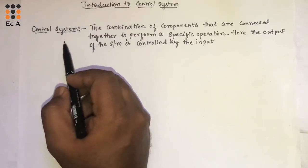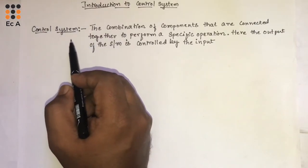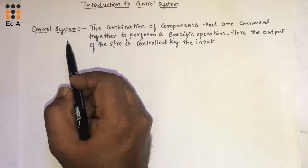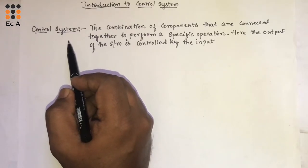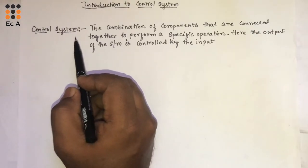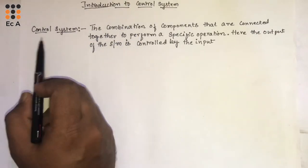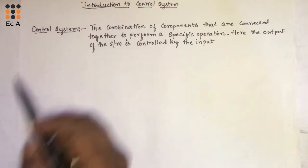A system is a unit that takes input, processes the input, and provides the output. Now, we will understand what is a control system.